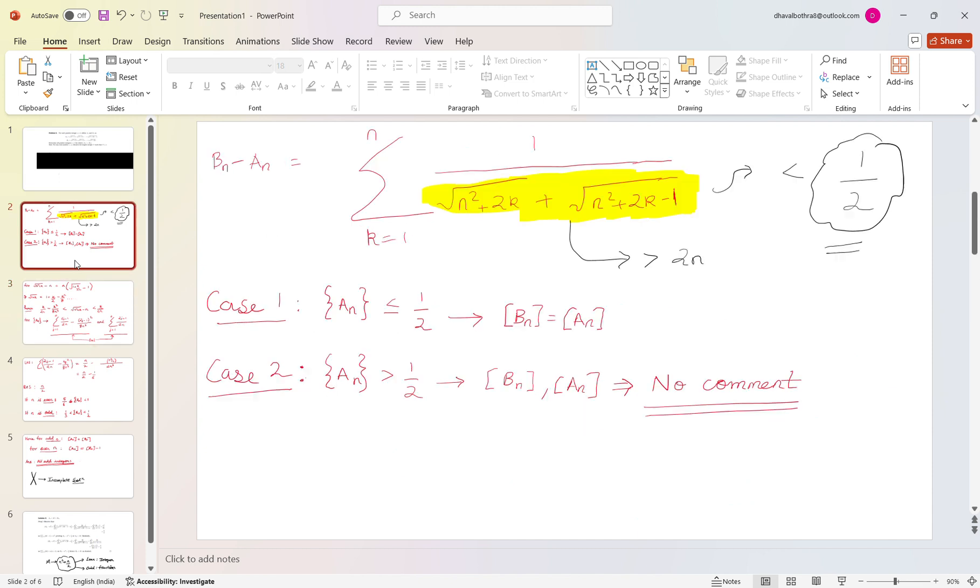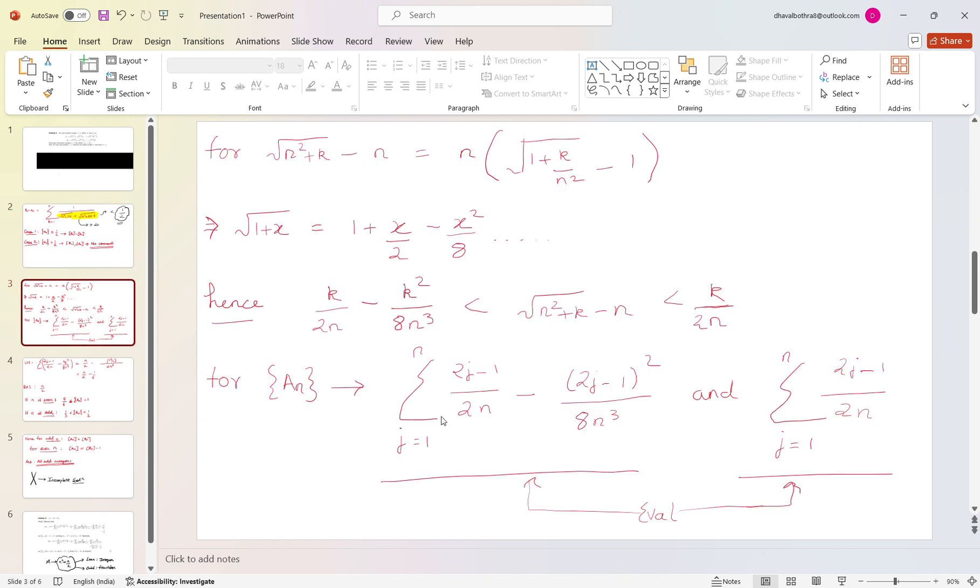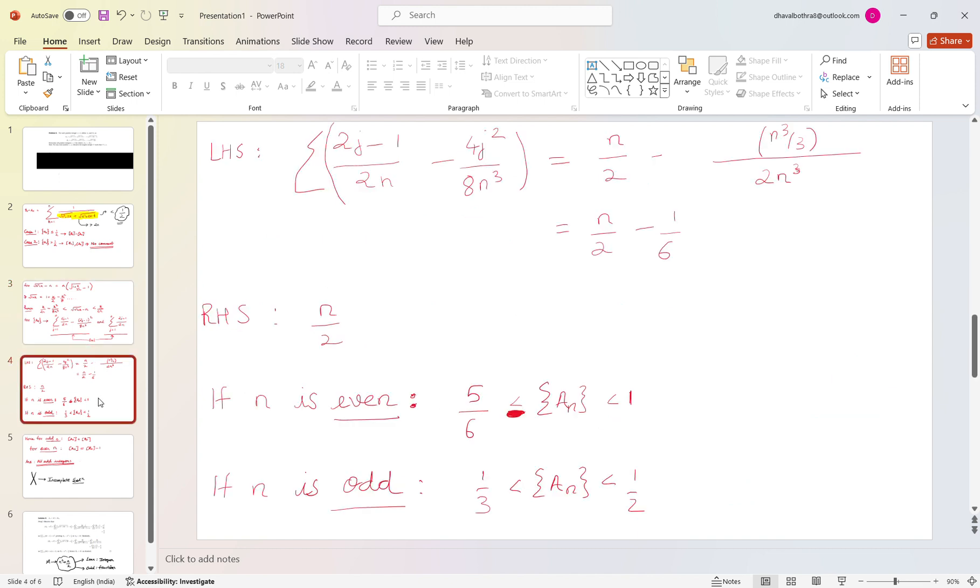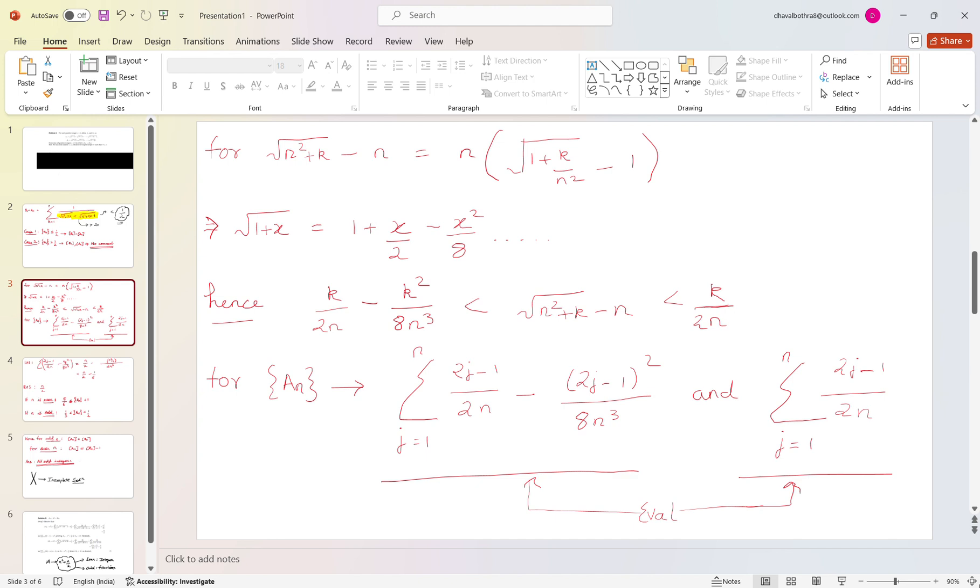And currently we need to find just whether it is less than or equal to half or greater than half. So I just need the summation of the left part and right part. For the RHS summation you can easily see that this is the sum of all the odd numbers and the sum of all odd numbers is n squared, so n squared upon 2 and it will become easily n by 2. That's pretty obvious.